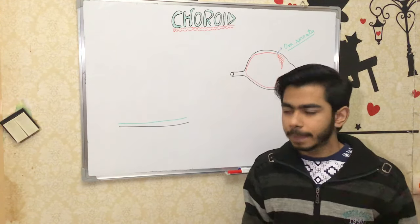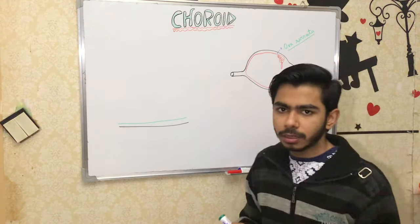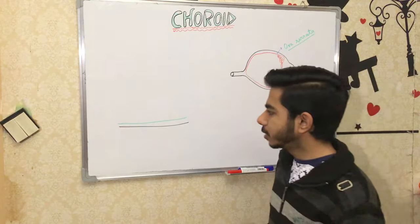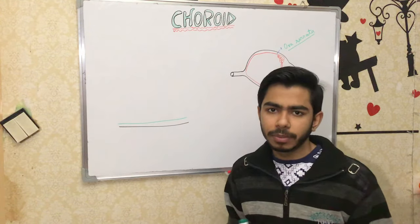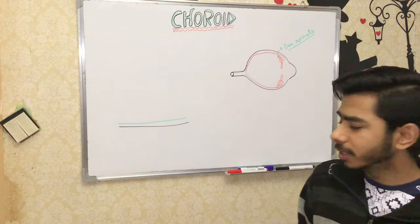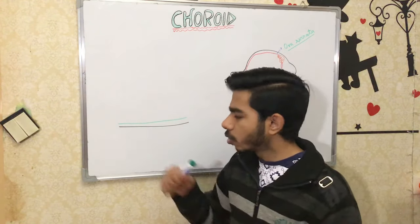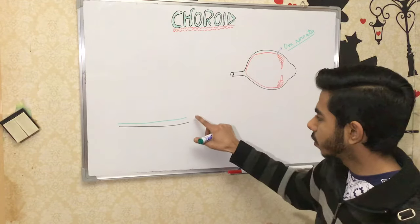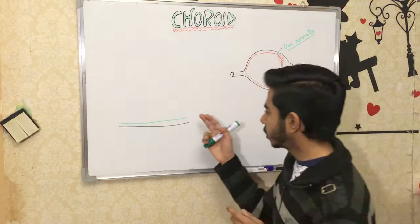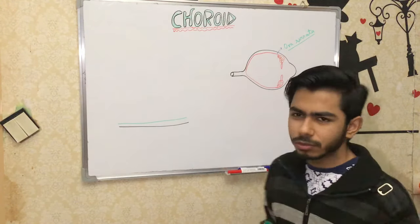In the supra choroidal space, arteries and nerves are passing and supplying blood there. Specifically, the short posterior ciliary arteries as well as long posterior ciliary arteries and nerves pass through this space. The first layer of the choroid from outer to inner side is the supra choroidal lamina, which is very firmly attached to the sclera.